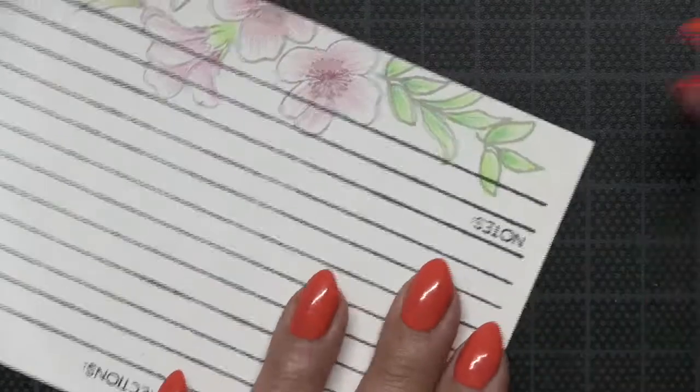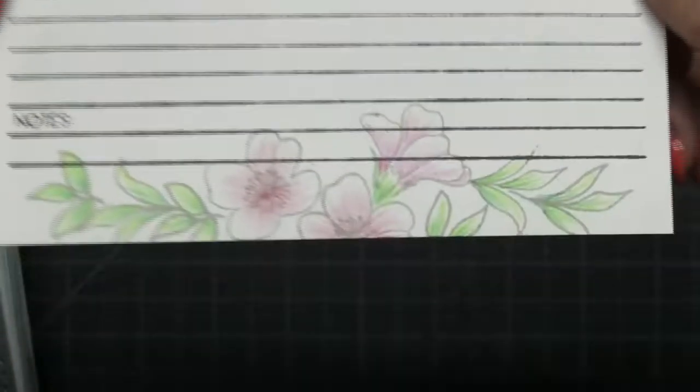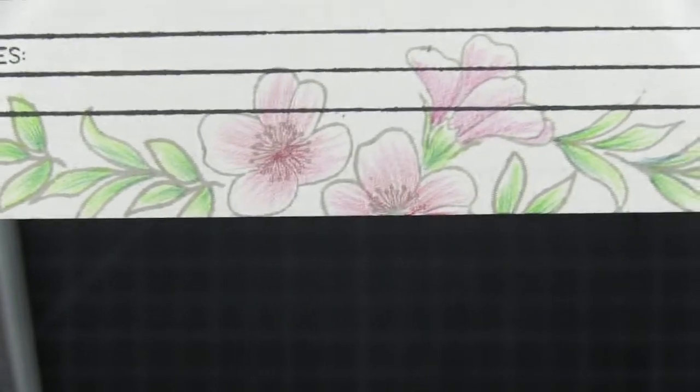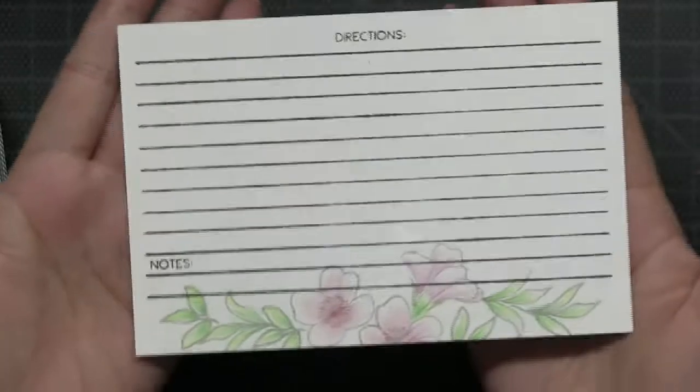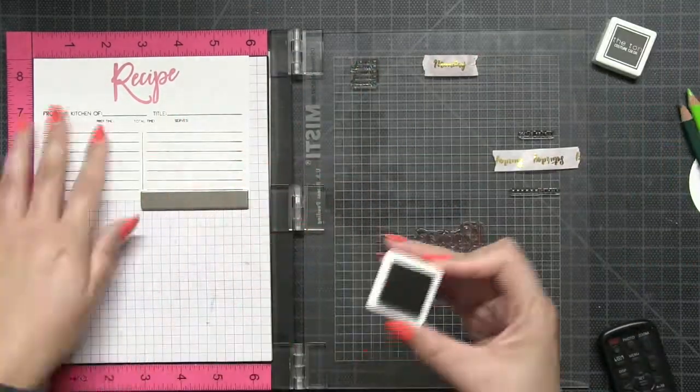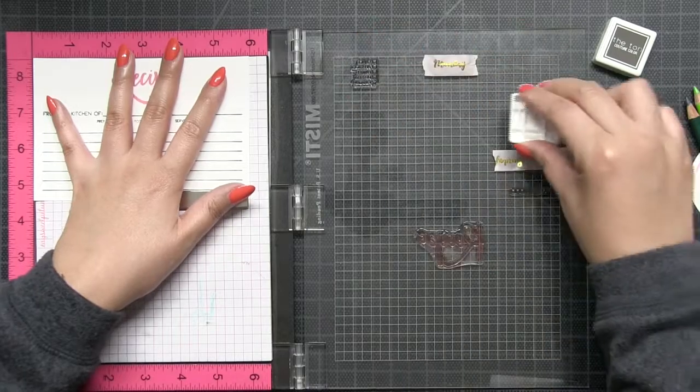Once you're done, you're going to take a step back and you're going to look at your project as a whole, and you're not going to notice the little bits of details that you'll usually notice as you're coloring. So you need to take a step back and just walk away from your project sometimes, and when you come back it's going to look really great.